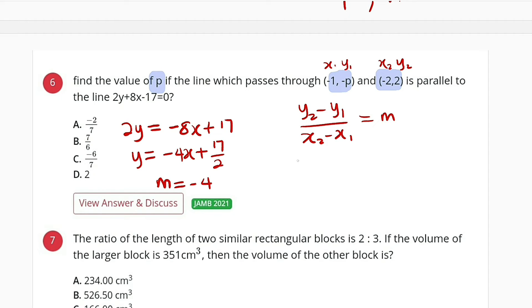We start with y2, we have 2, then minus y1, which is p, negative, so it becomes positive. Divide by x2, which is negative 2, then minus x1, minus minus is plus 1. And this is equal to m, which is negative 4.